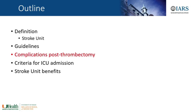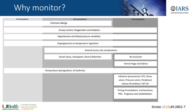Let's look at some common ICU complications post-thrombectomy. This is a busy chart. We have to remember that these patients are often fairly sick — patients who undergo thrombectomy have large vessel occlusions, they might have bigger neurologic deficits, and they might have had their stroke ongoing for up to 24 hours. So there are a lot of ICU issues to address.